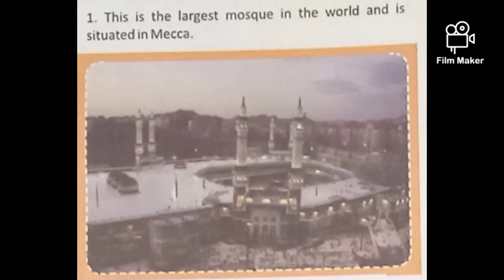Number one: this is the largest mosque in the world and is situated in Mecca. Mecca is the religious place of the Muslims — they visit there for the Hajj, just like a pilgrimage. Muslims from all over the world visit there for religious ceremony. So this is the Masjid Al-Haram. Spelling: M-A-S-J-I-D A-L H-A-R-A-M.